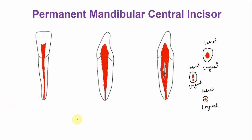With advancing age, because of the production of more secondary and tertiary dentine, the size of the pulp chamber is reduced and the root canal is also reduced. The pulp horns will be lost, and overall the size of the pulp chamber is reduced in all dimensions. Similarly, in the labio-lingual section, there is also a reduction in the size of the pulp chamber and the canal.